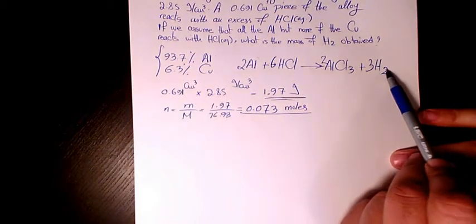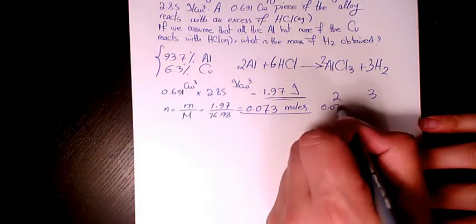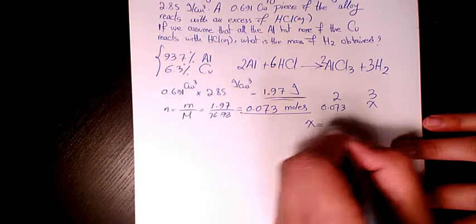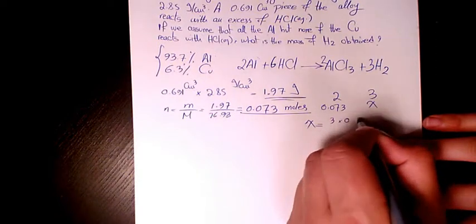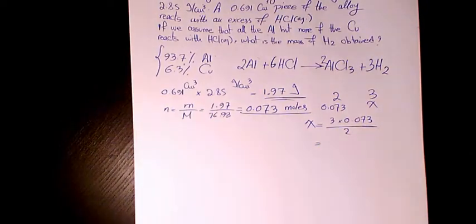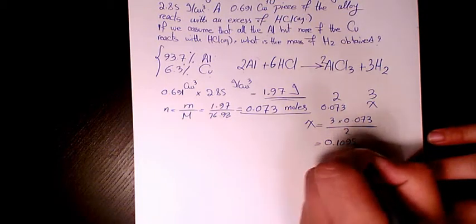So for every two moles of aluminum, we produce three moles of hydrogen. If we have 0.073 moles of aluminum, how many moles of hydrogen produced? So it's going to be three times 0.073 divided by two.